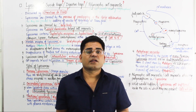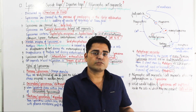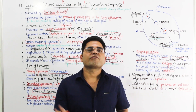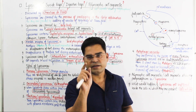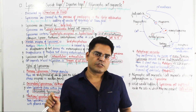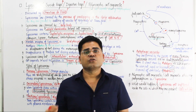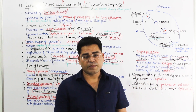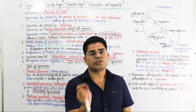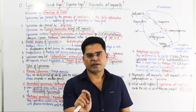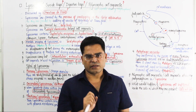It is called a polymorphic cell organelle because it exists in multiple forms. In historical context, lysosomes were discovered by Christian de Duve, and this polymorphic nature is what defines their identity.